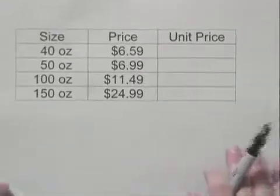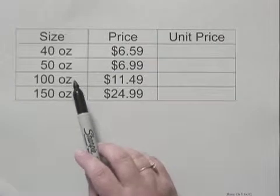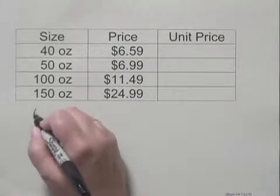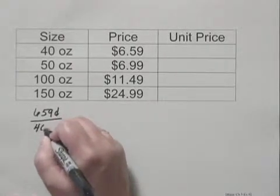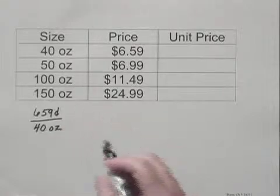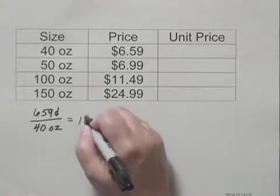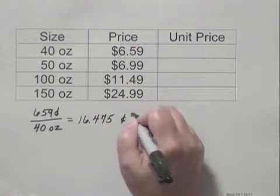For each one of these containers, we will find the price in cents per ounce. For the first one, we have 659 cents divided by 40 ounces, which gives us, when we divide 659 by 40, 16.475 cents per ounce.